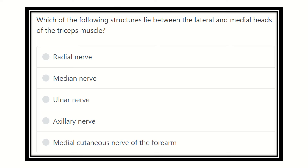This is a direct question. They want to know which structure lies between the lateral head and medial head of the triceps muscle. First we have to find the triceps muscle, then its heads, and then it will be easy to identify the structure located between them. The options are: radial nerve, median nerve, ulnar nerve, radial cutaneous nerve, and medial cutaneous nerve of the forearm.